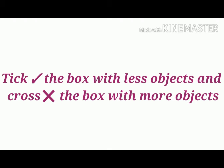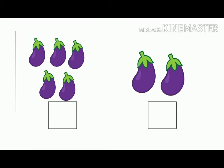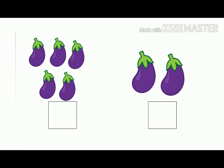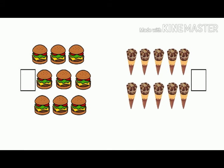In the next examples, we have to tick the box with less objects and cross the box with more objects. Here on the left side there are five brinjals and on the right side there are two brinjals, so we are going to put a tick mark on the right side below the two brinjals and a cross mark on the left side below the five brinjals.